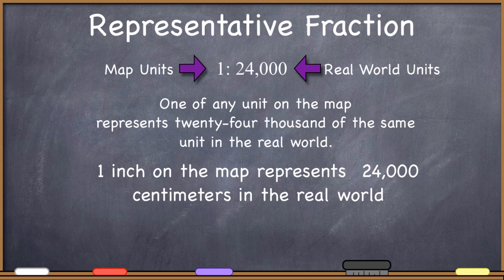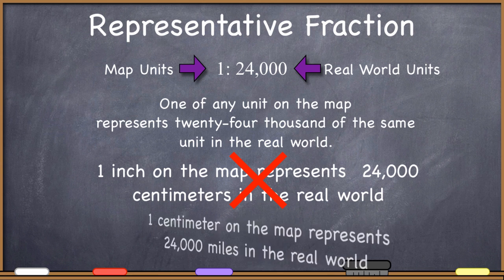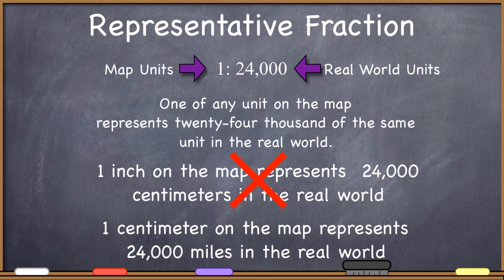Take a look at this: 1 inch on the map represents 24,000 centimeters in the real world. This is not true because I have put inches on one side of the representative fraction and centimeters on the other. Here again, 1 centimeter on the map represents 24,000 miles in the real world. Also not a true statement. I'm putting different units on the different sides of the fraction.